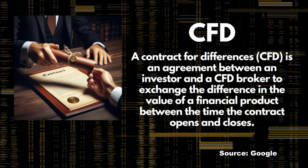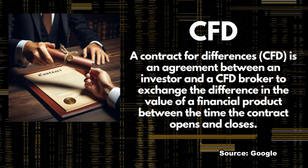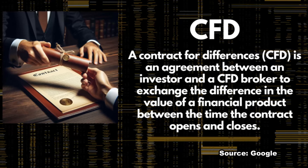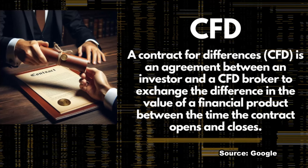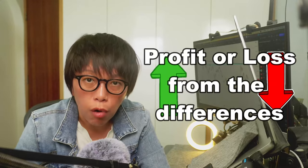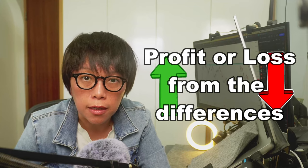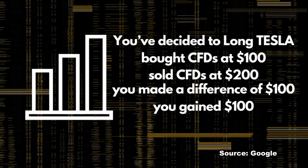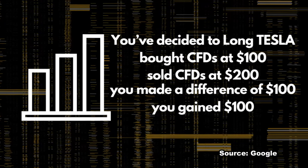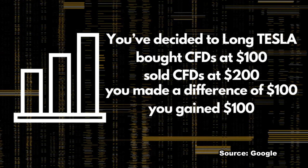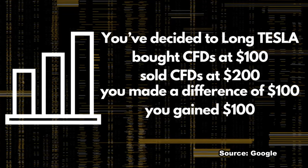Contract for difference is a contract between, for example, a financial institution — which is your broker — and you make a contract. By opening this contract, you make a profit or loss from the differences. For example, if you decided to long Tesla and you buy a CFD at $100 and sell that CFD for $200, you make a difference of $100, and you gain $100 for that contract for difference.